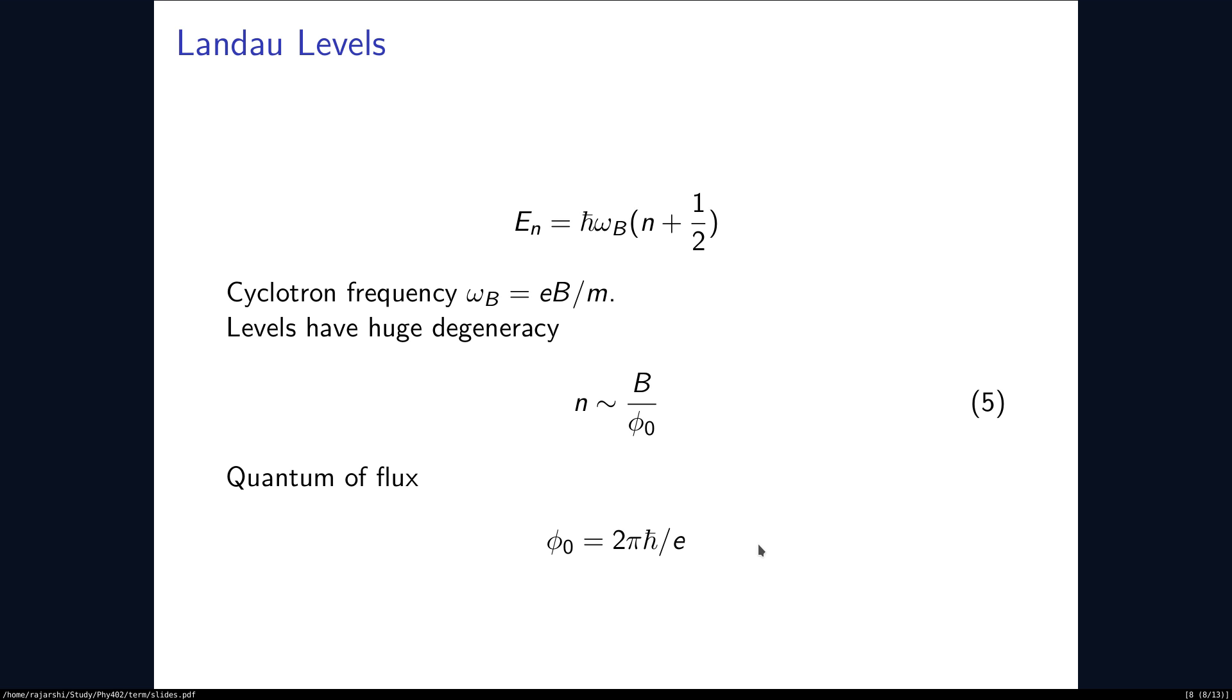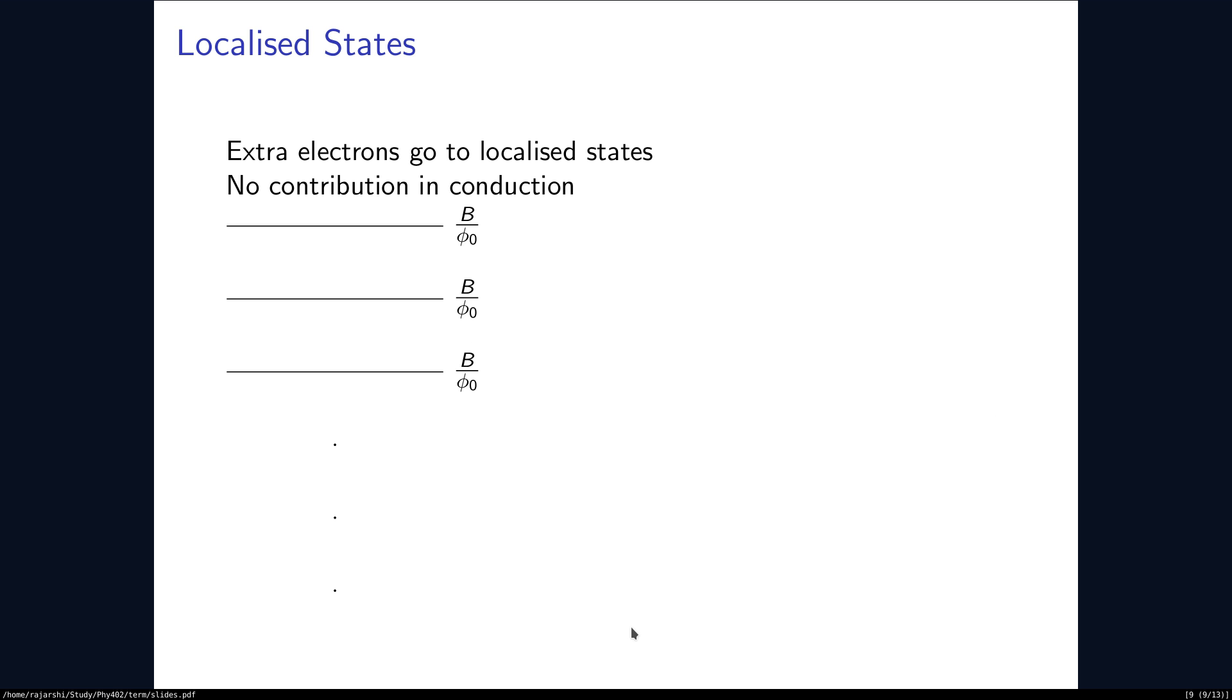And each level has a degeneracy. The number of electrons per unit area is going to be B by phi naught, where phi naught is a quantum of flux given by this lowest equation. What happens is there are several states and when exactly nu of them are filled, we find something interesting.